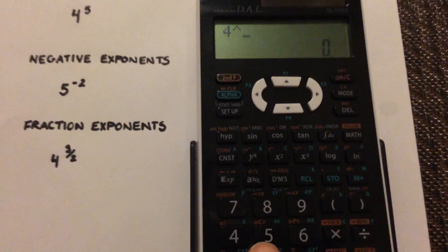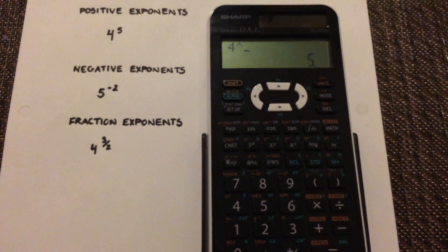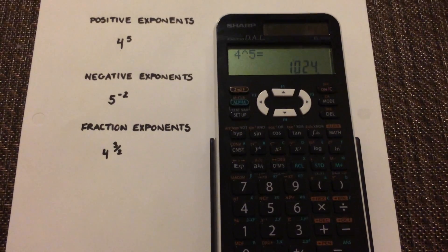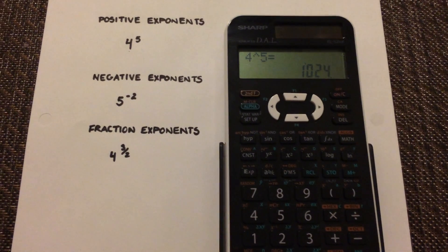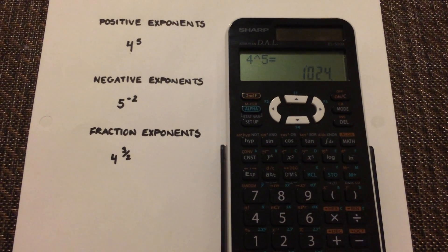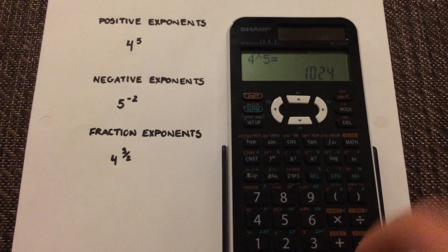Then select 5 and hit equals. So that's one example of how to enter positive exponents.